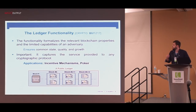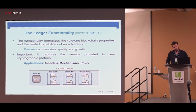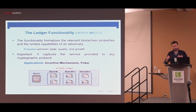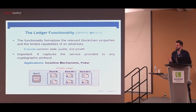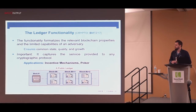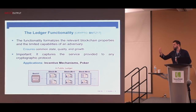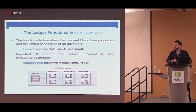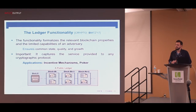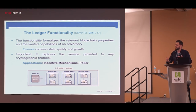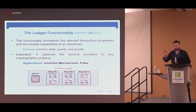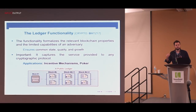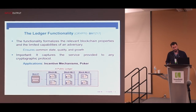This is important because such functionality, in a universal composable interpretation, allows you to clearly define what applications can expect from a blockchain protocol such as Bitcoin. So if you want to use Bitcoin as a service to implement a poker application or something like that, you would want to know exactly what you can rely on if you invoke the black-box interface that the blockchain protocol should give you.